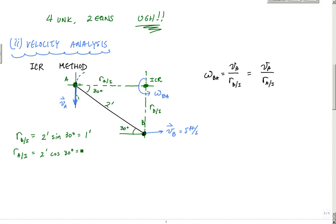And then RAI is two feet cosine of 30 degrees, which is, this is square root of three over two. So this is square root of three, which is 1.732 feet. These are feet, feet notations right there. So that's good.